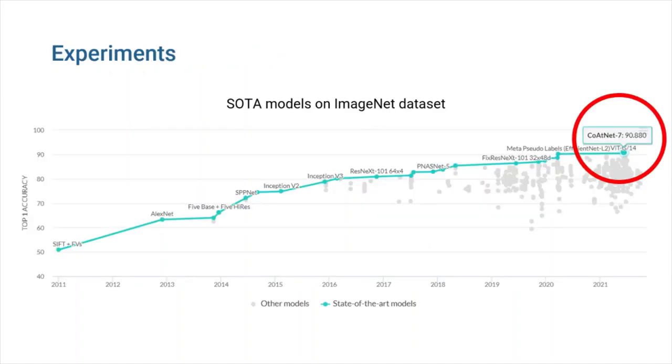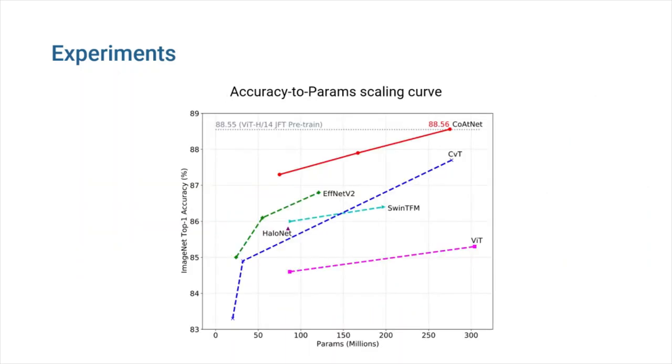By the time this video was recorded, CoAtNet was still the state-of-the-art model on ImageNet dataset. And compared with other models with same number of parameters, CoAtNet performs better.